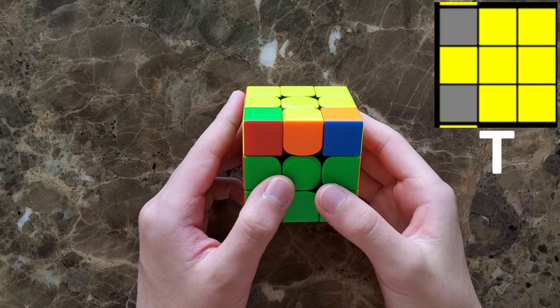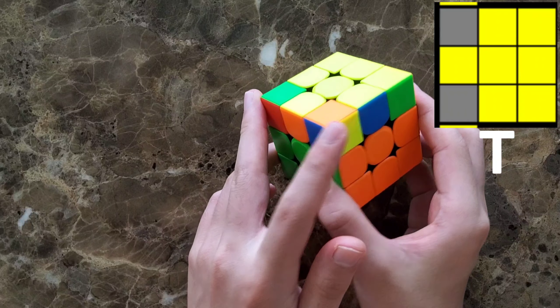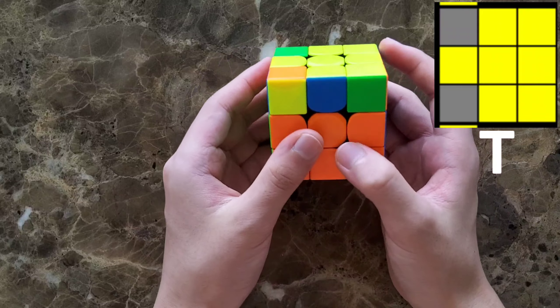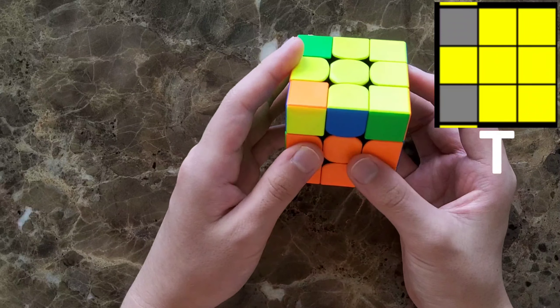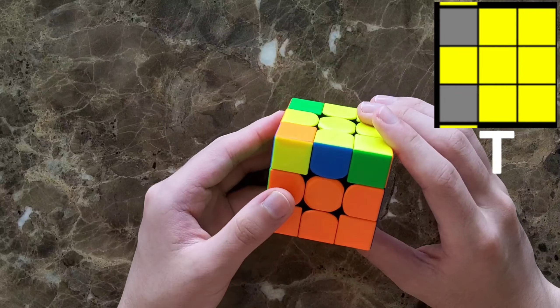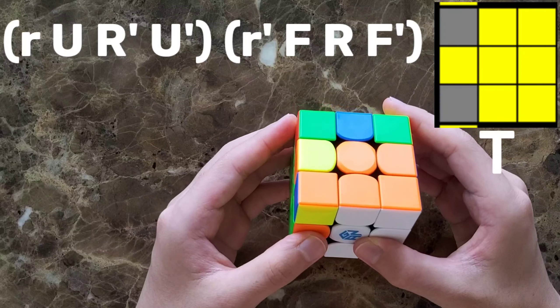This case is also tank shape, but the two yellow pieces are on the opposite side like this. So you hold it like this and use the algorithm.